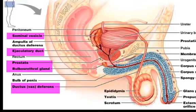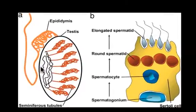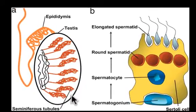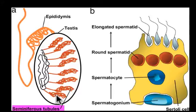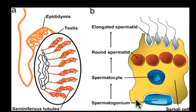Taking a closer look at the testes: think of the testes as a ball of curled-up tubes called the seminiferous tubules. The seminiferous tubules are where sperm production takes place. All of these tubes connect together and eventually lead to the epididymis and the vas deferens.